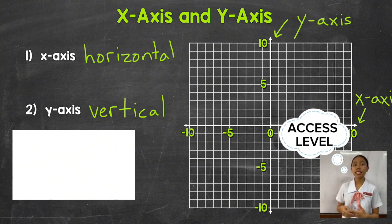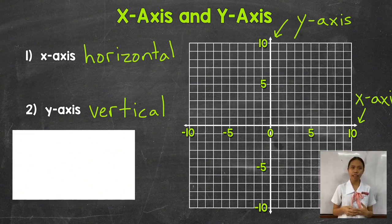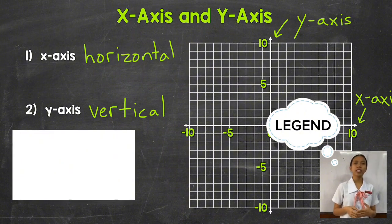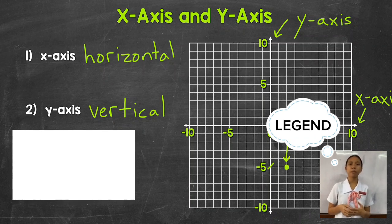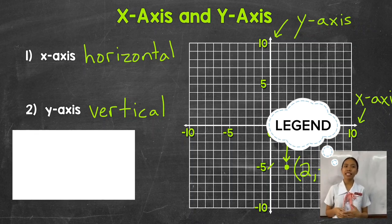Next is the title. The title of the graph provides a concise summary of its content or purpose, helping viewers understand its context and significance. Next is the legend. A legend, when present, helps identify different lines or categories represented on the graph, making it easier to interpret complex data sets. Finally, the scale on each axis delineates the range of values being represented, helping gauge the magnitude of the data points.